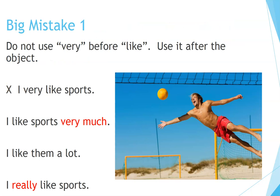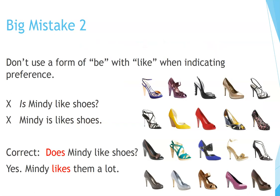Big mistake one: Do not use very before like; use it after the object. Incorrect: I very like sports. Correct: I like sports very much. I like them a lot. I really like sports. Big mistake two: Don't use a form of be with like when indicating preference. Incorrect: Is Mindy like shoes? Mindy is like shoes. Correct: Does Mindy like shoes? Mindy likes them a lot.